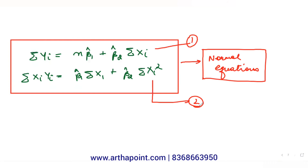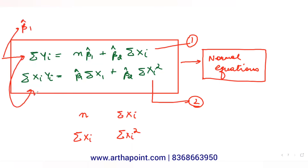We can use Cramer's rule here. The matrix form is: [n, summation xi; summation xi, summation xi squared] times [β1 hat; β2 hat] = [summation yi; summation xi yi]. Instead of Cramer's rule, you could also solve by substitution — find β1 hat from the first equation, substitute into the second, and solve for β2 hat.